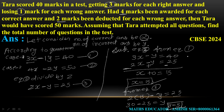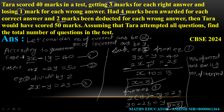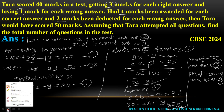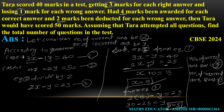Now यहाँ पर: Number of Correct Answer questions = X = 15, और Number of Incorrect Answer questions = Y = 5। Total number of questions = X + Y = 15 + 5 = 20 questions।